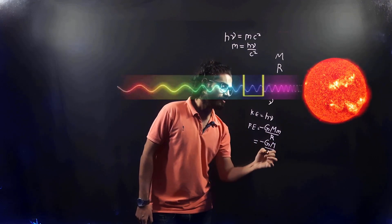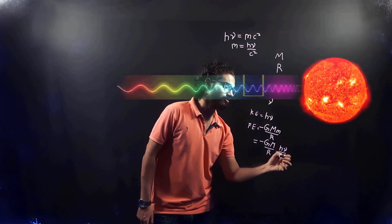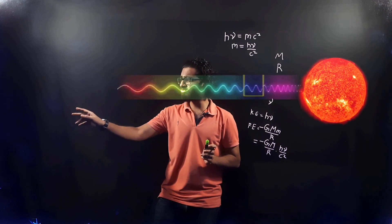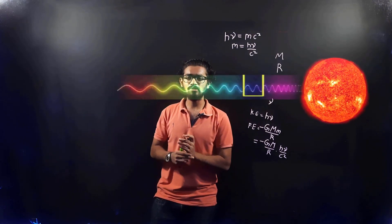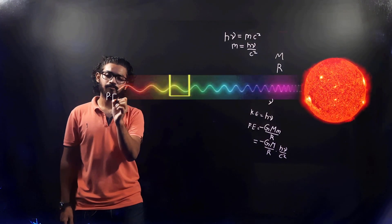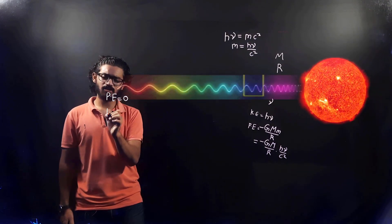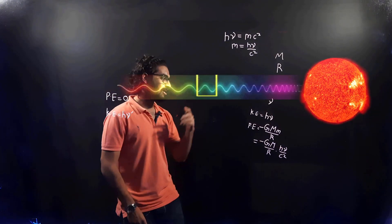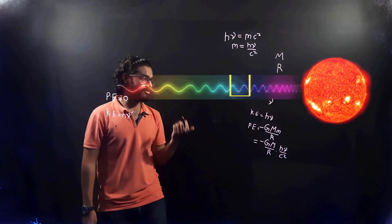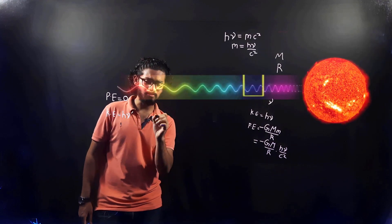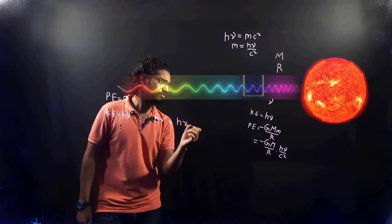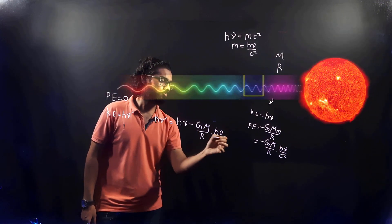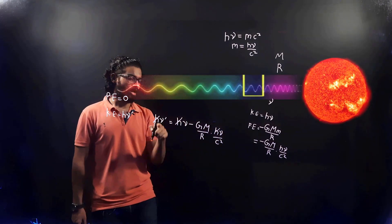Substituting m = hμ/c² into the potential energy term gives −GM/R × hμ/c². At infinity, the potential energy is zero and the photon's energy is hμ'. By conservation of energy: hμ' = hμ − (GM/R)(hμ/c²). The Planck's constant h cancels out, giving an expression for the final frequency μ'.